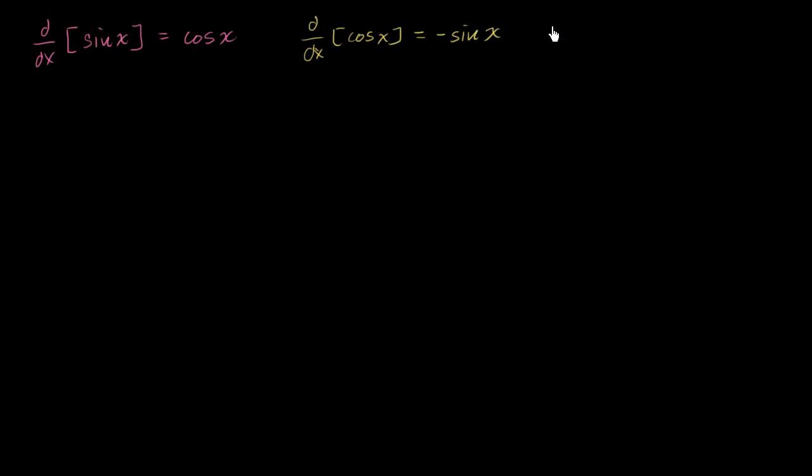And then finally, the derivative of tangent of x is equal to 1 over cosine squared of x, which is equal to the secant squared of x. Once again, these are all very good things to know.